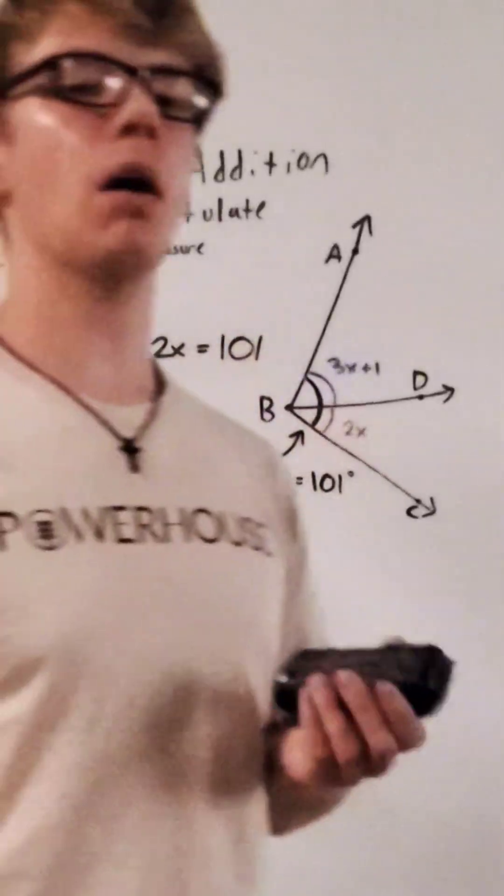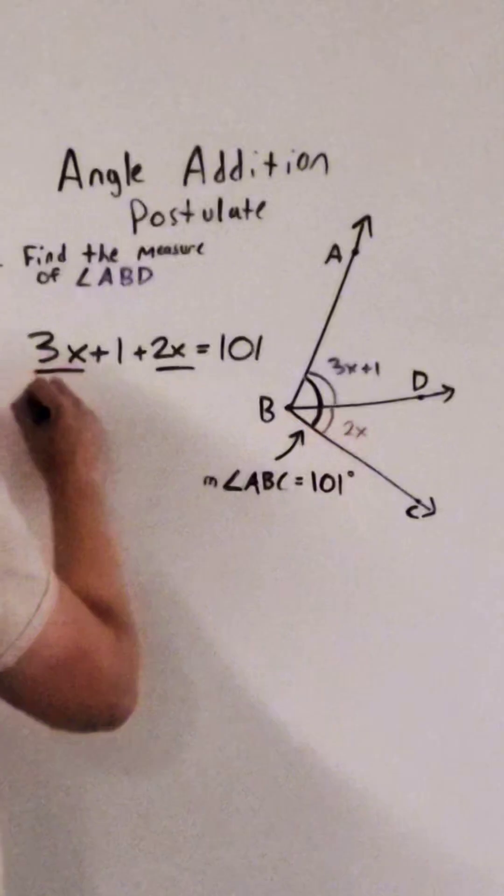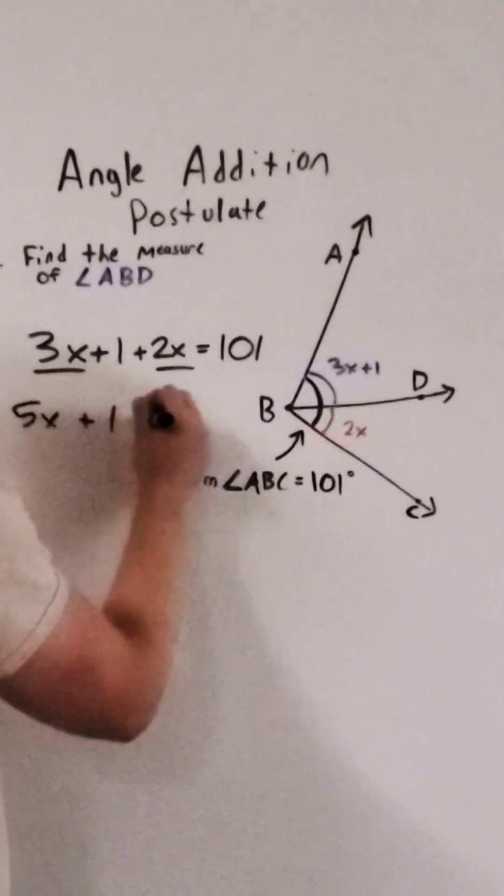This is just a simple algebra problem. Now we have to combine like terms. 3x and 2x is 5x, still have that plus 1 there.